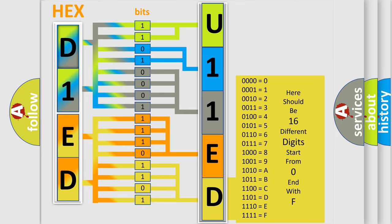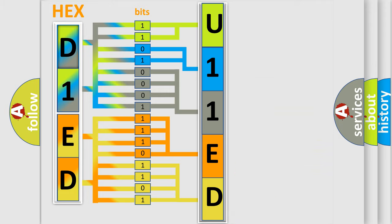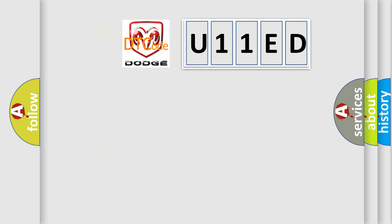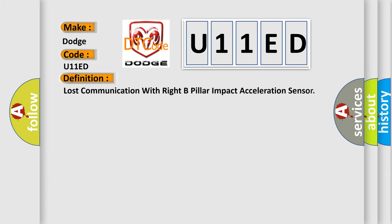We now know the way the diagnostic tool translates the received information into a more comprehensible format. The number itself does not make sense to us if we cannot assign information about what it actually expresses. So, what does the diagnostic trouble code U11ED interpret specifically for Dodge car manufacturers?